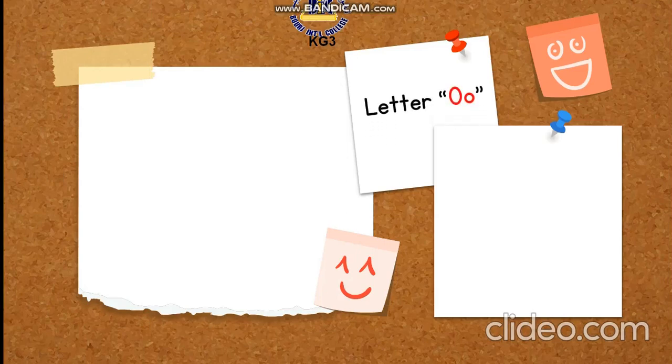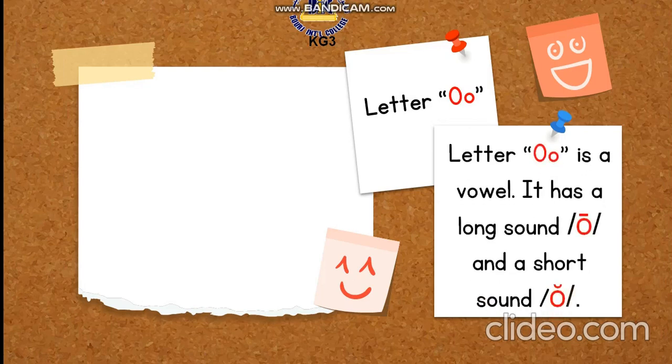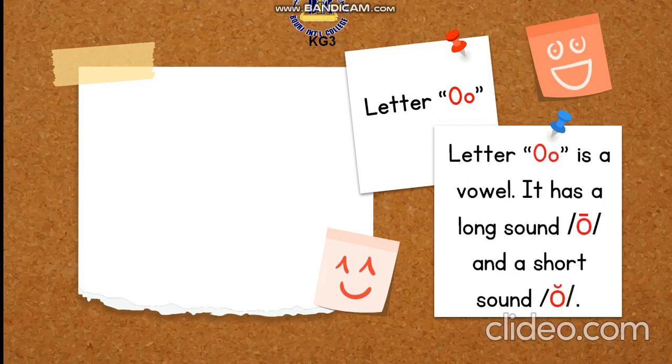Letter O. Letter O is a vowel. It has a long sound O and a short sound U.